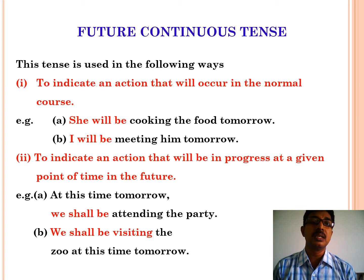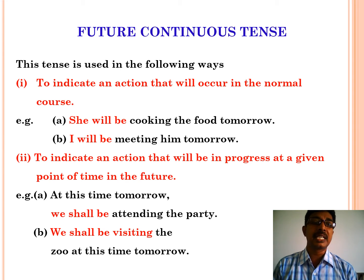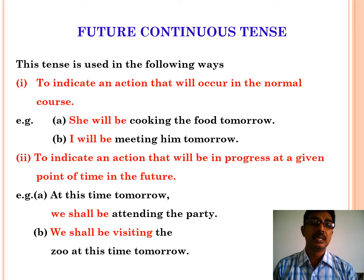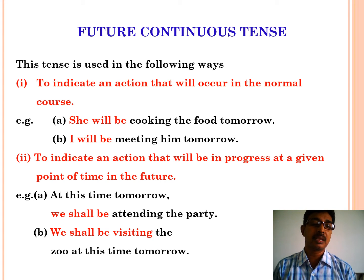Now let us discuss future continuous tense. This tense is used in the following ways. First, it is used to indicate an action that will occur in the normal course. For example: she will be cooking the food tomorrow. I will be meeting him tomorrow. It is also used to indicate an action that will be in progress at a given point of time in the future. For example: at this time tomorrow, we shall be attending the party. We shall be visiting the zoo at this time tomorrow.